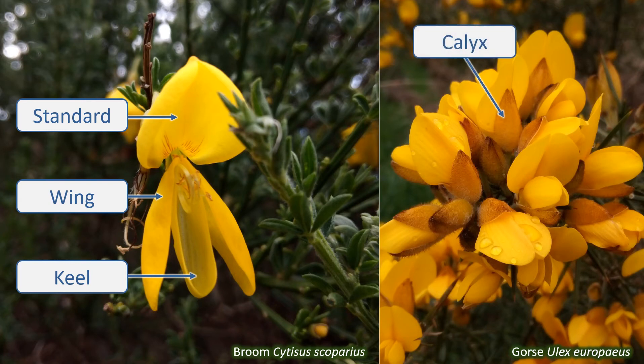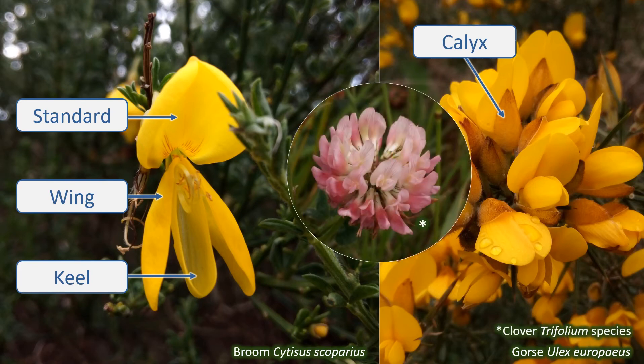The ovary is superior, attached above the rest of the floral parts. The flowers often appear in clusters. Some species, like the clovers, have lots of small flowers packed into a flower head, but if you look closely you will see each small flower has the characteristic Fabaceae structure.